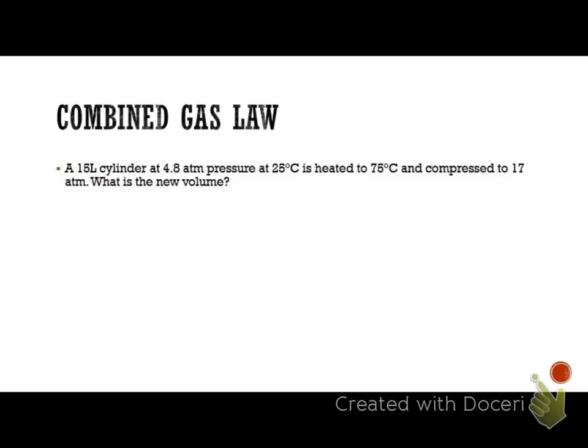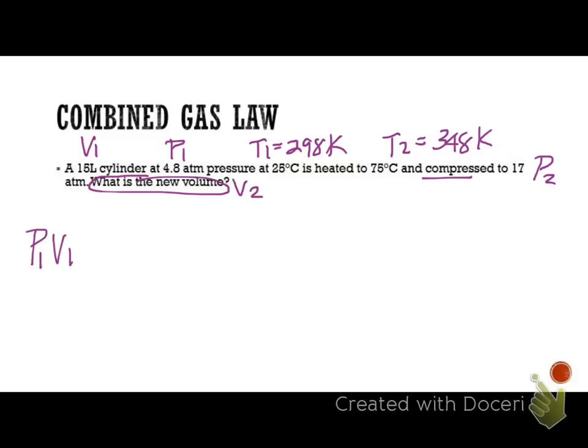So let's work a problem. We have a 15-liter cylinder at 4.8 atm. So we're going to have our first volume here. Pressure 1 here, and then 25 degrees is going to be, of course, 298 K when we add our conversion. It's heated to 75, so that's going to be T2, and that's going to be 348 when we convert it. And it's compressed to 17 atm, so P2, and wants to know what is the new volume. So we're going to be looking for V2. So let's do our equation, P1 V1 times T2 is equal to P2 V2 times T1, and we're solving for V2. So when we isolate that, it's going to be P1 V1 T2 over P2 T1.